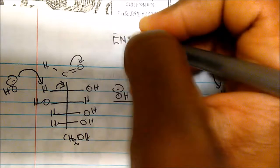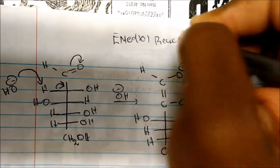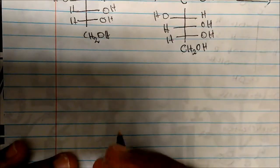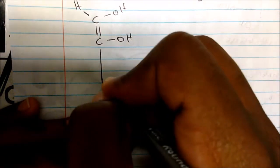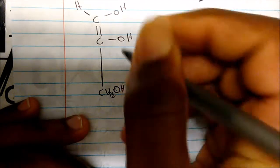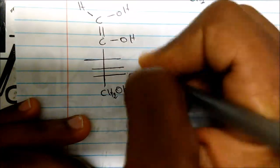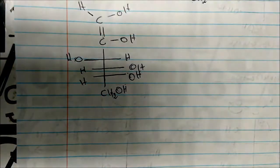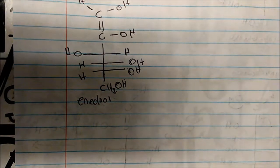This is the enediol reaction. We come to a structure with two alcohols and a double bond to the carbon bearing the other alcohol — giving us the enediol intermediate. The 'ene' is for the alkene, and 'diol' is for the two alcohols.